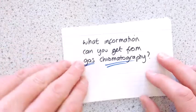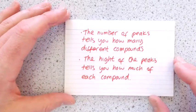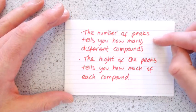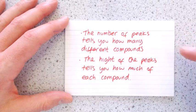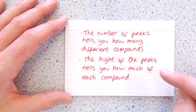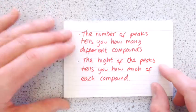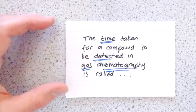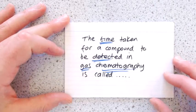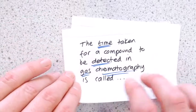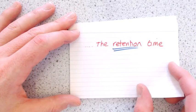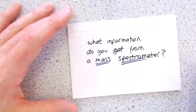What information do you get from gas chromatography? So the number of different peaks you get, that tells you how many different compounds you've got. And the height of the peaks, that tells you how much you've got of each compound. The time taken for a compound to be detected in gas chromatography is called the retention time.